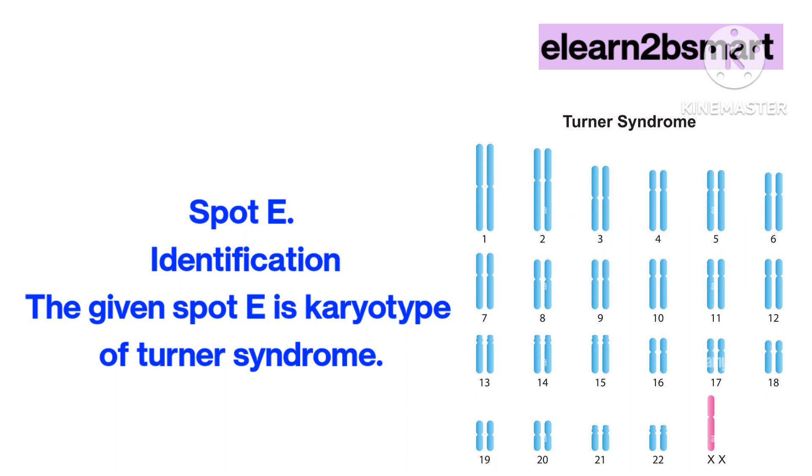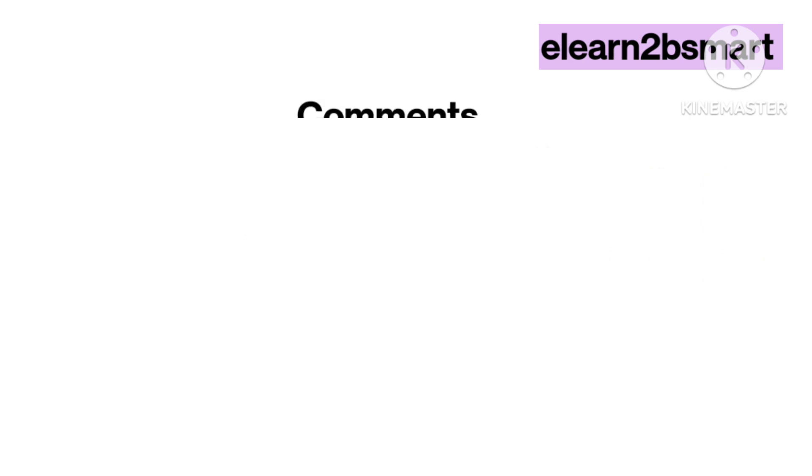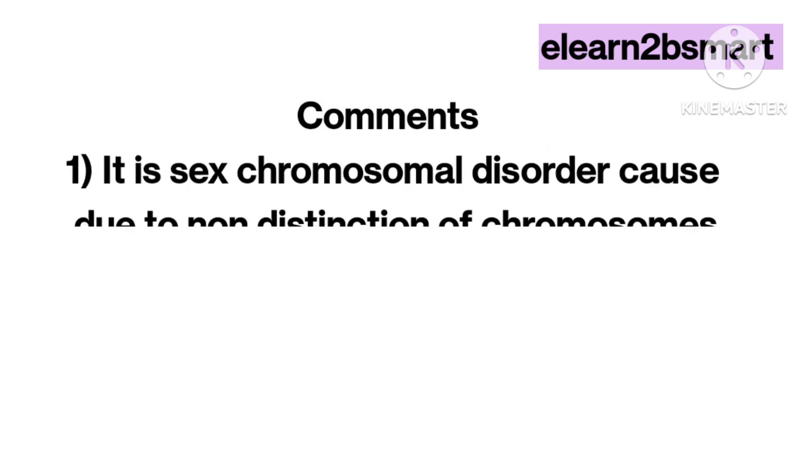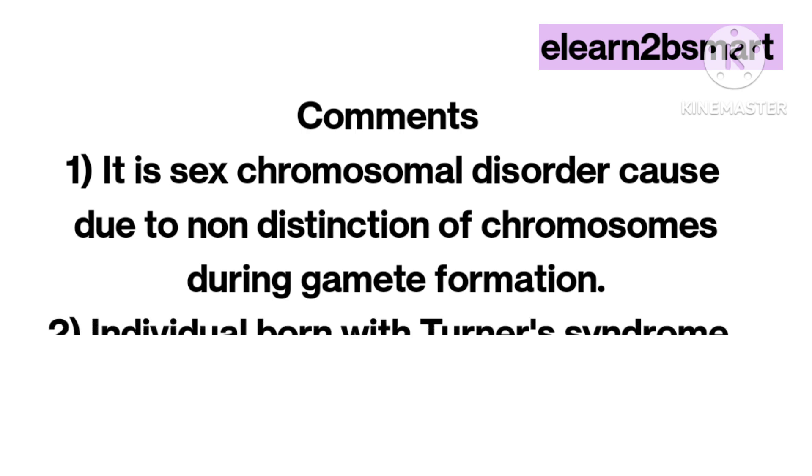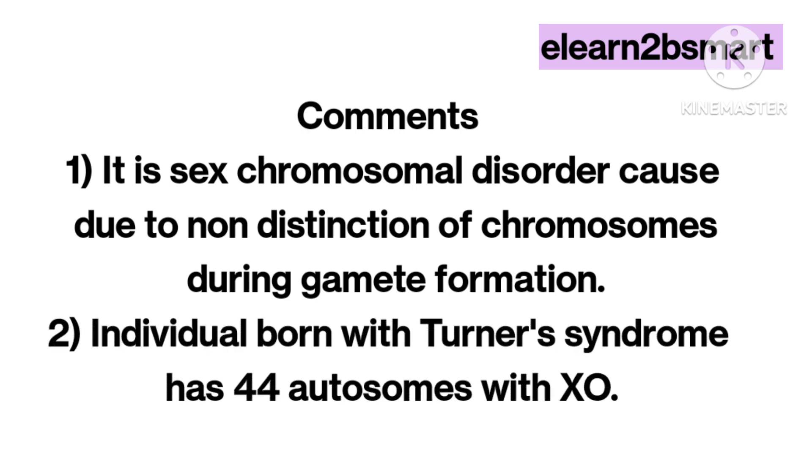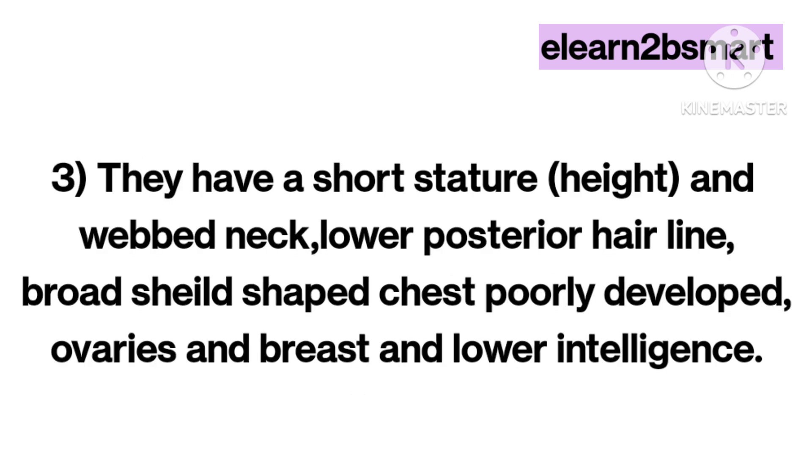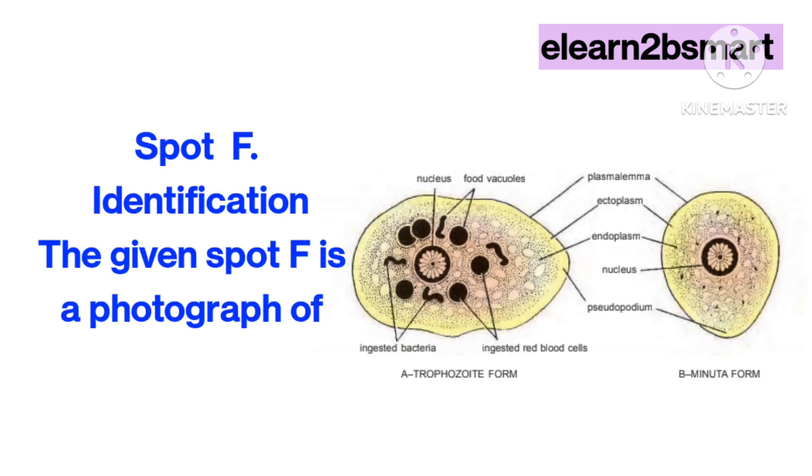Spot E identification: The given spot E is a karyotype of Turner syndrome. Comments: 1. It is a sex chromosomal disorder caused due to non-disjunction of chromosomes during gamete formation. 2. Individuals born with Turner syndrome have 44 autosomes with XO. 3. They have short stature, webbed neck, low posterior hairline, broad shield-shaped chest, poorly developed ovaries and breasts, and lower intelligence.